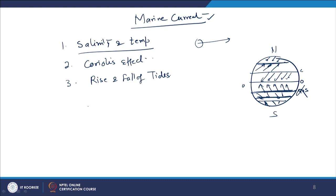Marine currents have high kinetic energy because the density of water is approximately 800 times the density of air. Therefore, to generate the same power, the machine size is comparatively smaller, or with the same volume, much more power can be generated compared to air. The systems used for marine current are similar to wind turbines, with design changes due to the higher fluid density. RPM is also reduced to limit viscous forces on the blades and extend blade life.